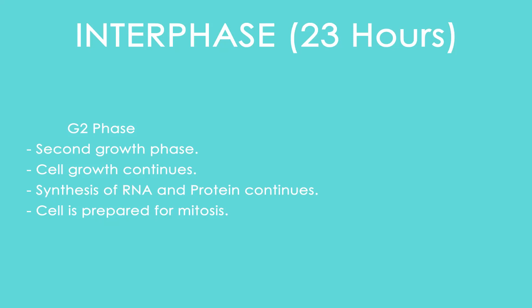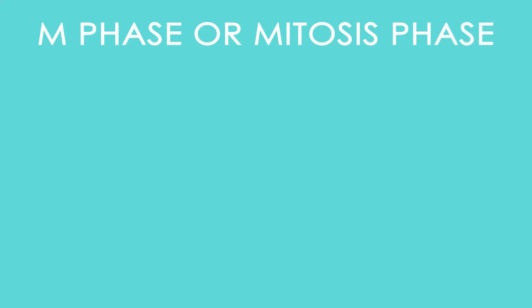The G2 phase, or gap 2 phase, is also called the second growth phase. Here, growth of the cell continues, synthesis of RNA and proteins also continues, and the cell is prepared for mitosis.